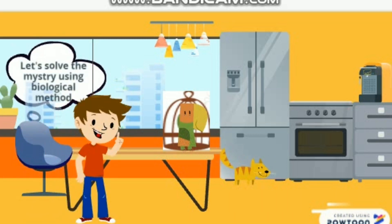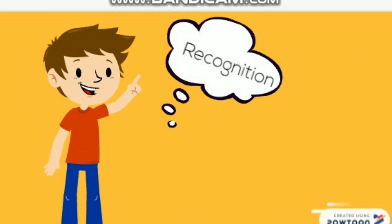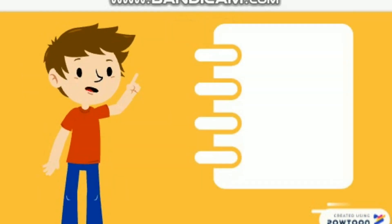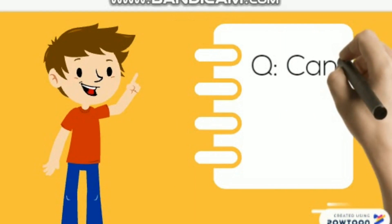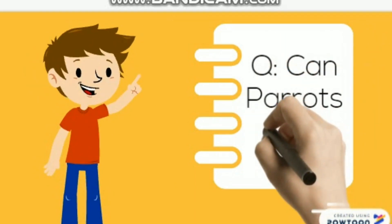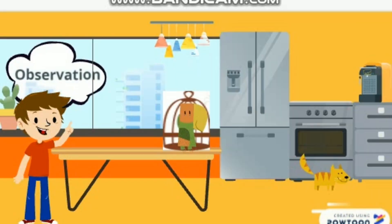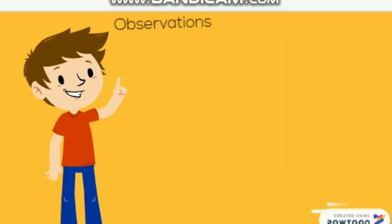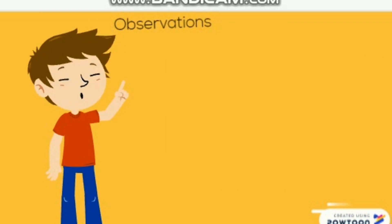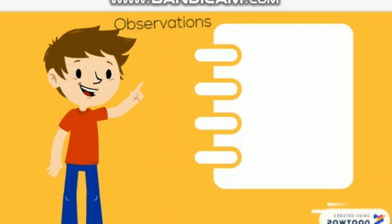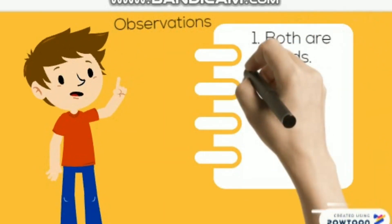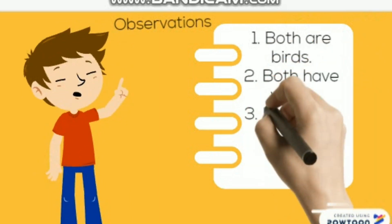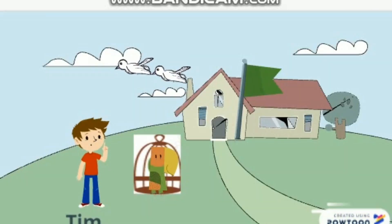Tim thought about the first step — recognition — and wrote down his question: can parrots fly? In the second step, observation, Tim observes his parrot and the birds flying outside. He notes down his observations: both are birds, both have wings, but he has not seen his parrot flying.